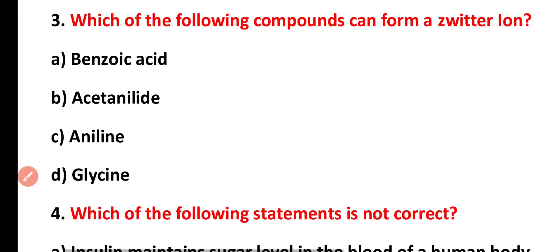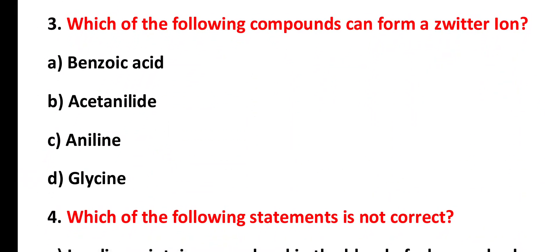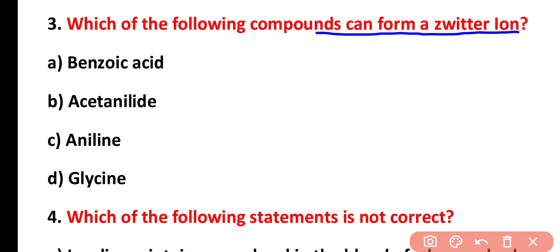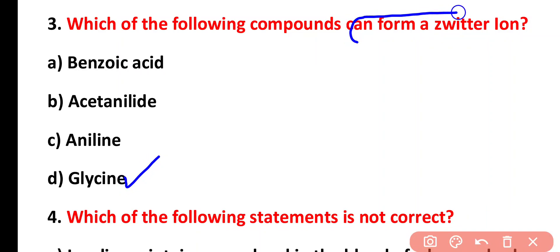Question three: which of the following compounds can form azoturine? Options: benzoic acid, acetaldehyde, aniline, or glycine. The correct answer is option D. Glycine is an amino acid which can form azoturine because it has different groups attached to the alpha carbon.